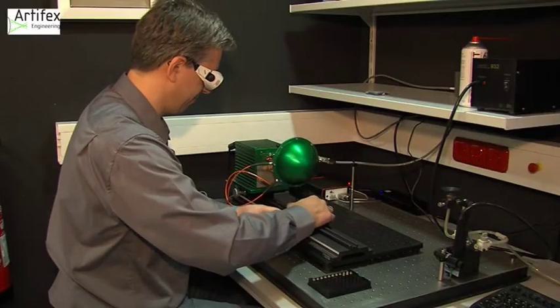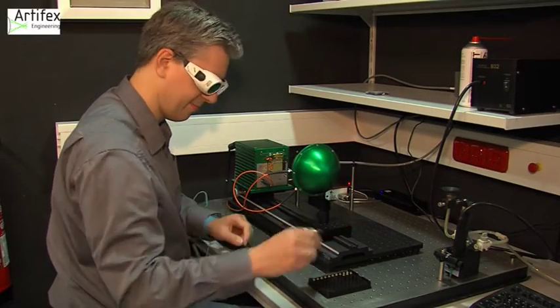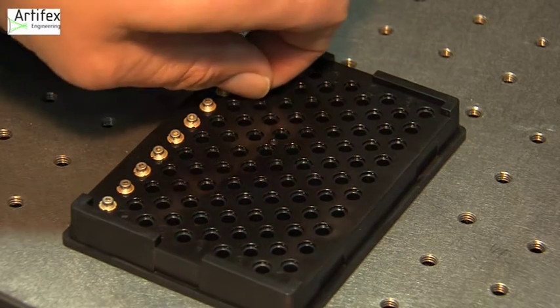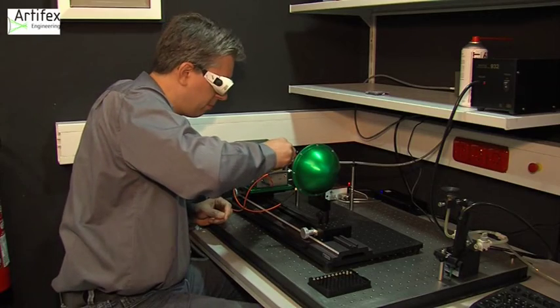The LIV100 is a short pulse test system for measuring mounted devices such as TO cans as well as unmounted chips and bars.